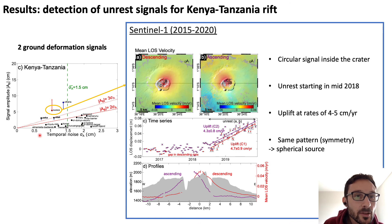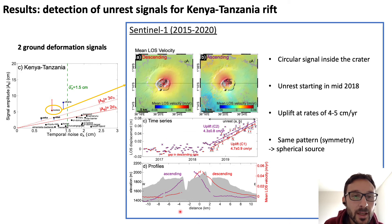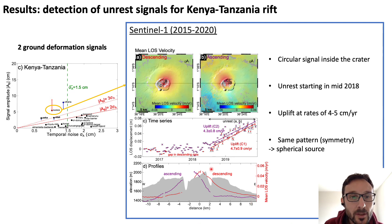In the Kenya-Tanzania Rift, there are two signals above the three-sigma amplitude-over-noise ratio. One of them is Sousua, which shows a circular signal inside the crater with unrest starting in mid-2018 in both ascending and descending geometries. We also modeled the signal as likely involving a spherical source located below the summit.